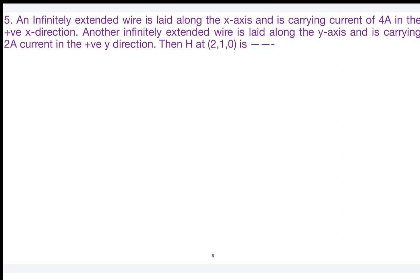Next question: an infinitely extended wire lies along the x-axis carrying 4 amperes in the positive x direction. Another infinitely extended wire lies along the y-axis carrying 2 amperes in the positive y direction. Find the magnetic field intensity at (2, 1, 0). Take each element one at a time. For the first element along the x-axis, the formula is H = I/(2πρ).